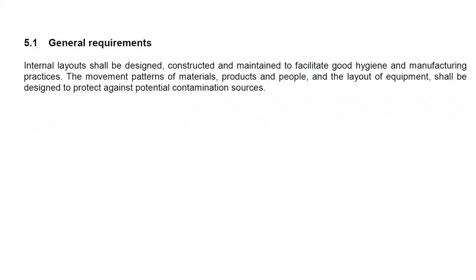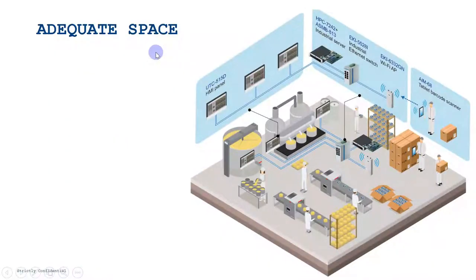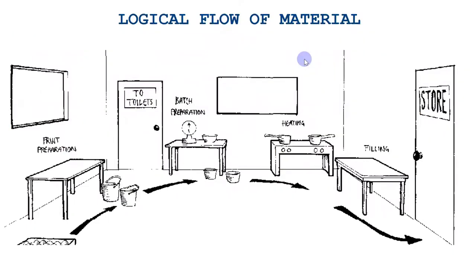Layout of Premises and Workspace, the fifth clause of the standard, is further divided into seven sub-clauses. The first sub-clause, 5.1, is the General Requirement and is a summary of the other six sub-clauses — if we implement those six sub-clauses we automatically comply with 5.1. Clause 5.2 is Internal Design, Layout and Traffic Patterns. The building shall provide adequate space, meaning your plant should have enough space to easily align equipment and machines so workers can do their jobs.